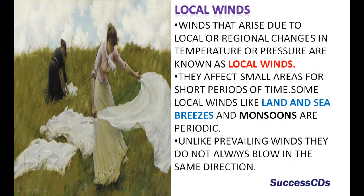Winds that arise due to local or regional changes in temperature or pressure are known as local winds. They affect small areas for short periods of time. Some local winds like land and sea breezes and monsoons are periodic. Unlike prevailing winds, they do not always blow in the same direction.